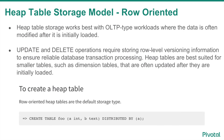Heap table storage is the default storage model in Greenplum. Heap table storage works best for OLTP-type workloads where the data is often modified after it is initially loaded. Update and delete operations work best on heap tables. Heap tables are best suited for smaller tables, such as dimension tables, that are often updated after they are initially loaded.